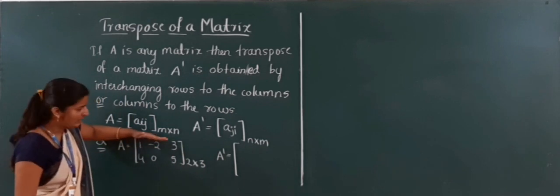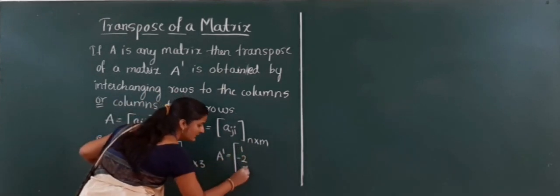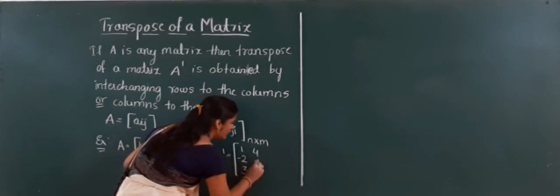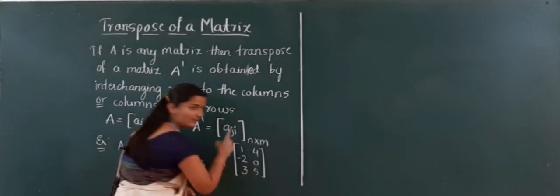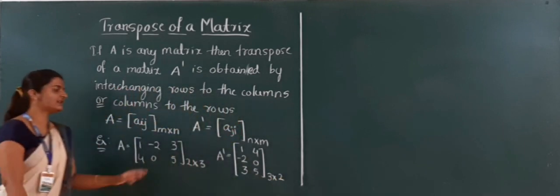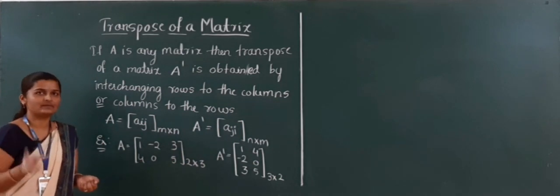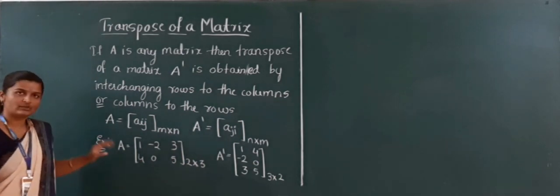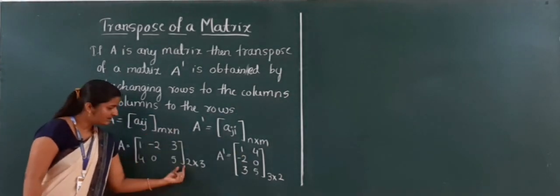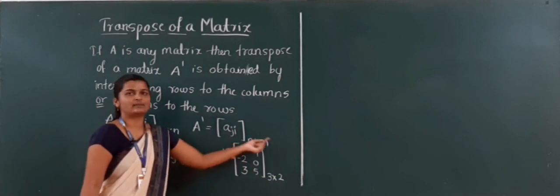Taking the first row 1, minus 2, 3 and writing it as a column, and the second row 4, 0, 5 as the second column. The resulting matrix has 3 rows and 2 columns. This is the transpose of the matrix — order 2 by 3 is converted into 3 by 2, that is M by N into N by M.